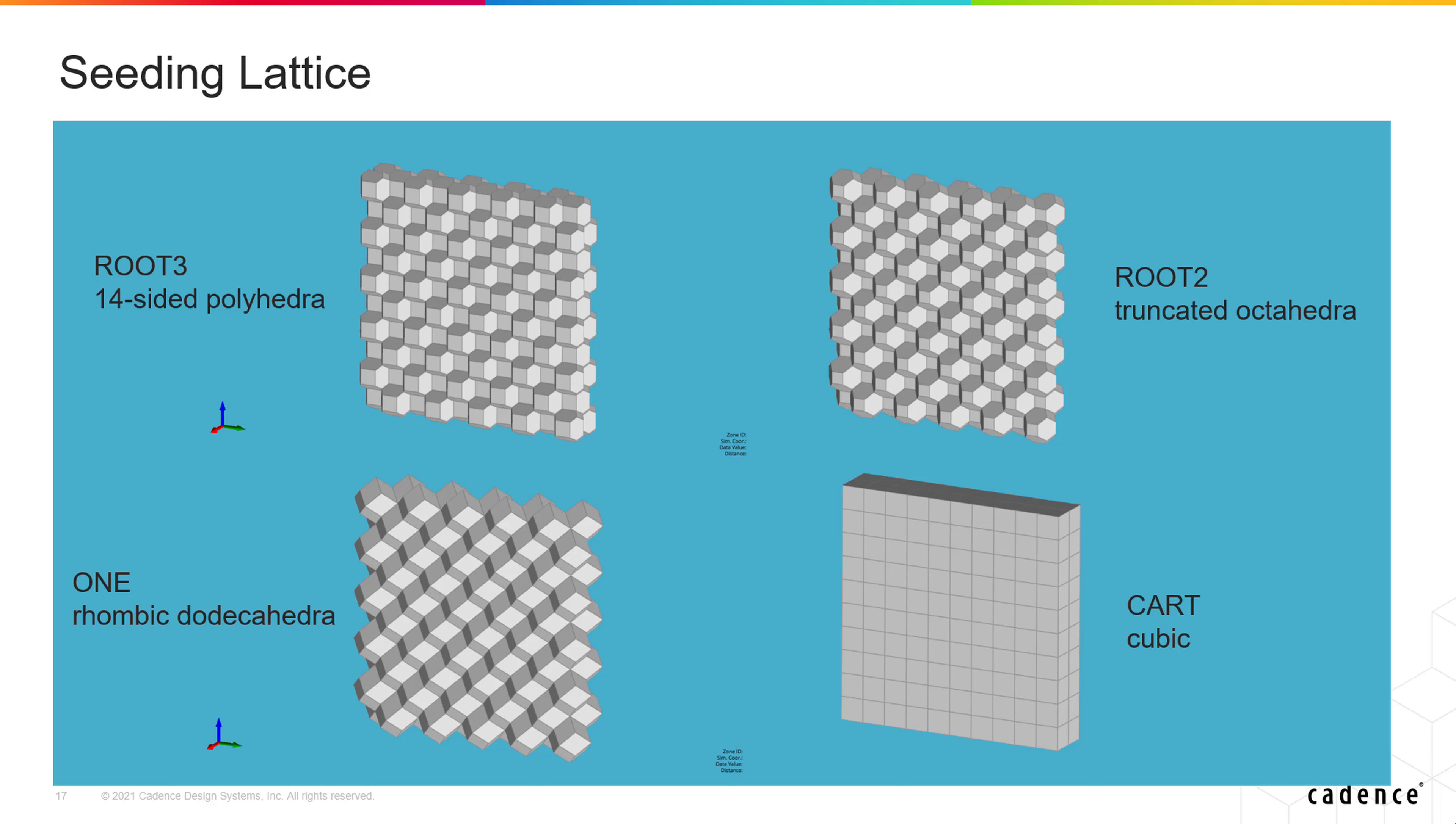There are four kinds of packing available in Stitch, meaning four different arrangements of the generating sites, which allow you to start with a different lattice. For example, you can start with a 14-sided polyhedral lattice, which is the default, or a cubic lattice.